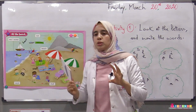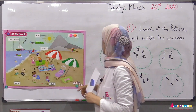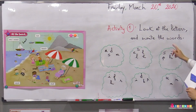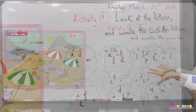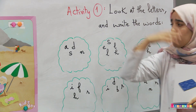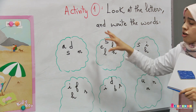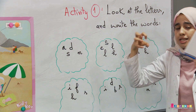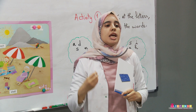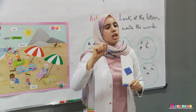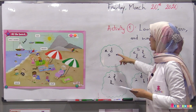Now my lovely students, we are going to practice what we have learned. Let's read the activity: look at the letters and write the words. Here we have scrambled words — vocabulary we have already seen. You have to put the letters in order.